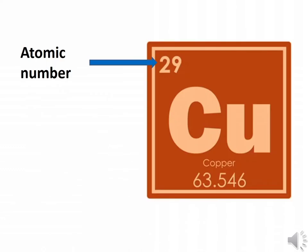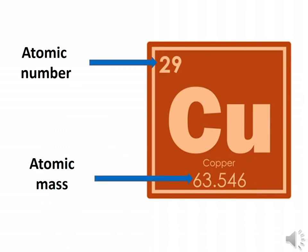The number above each symbol in the table is its unique atomic number. And the lower number with a decimal point represents the atomic mass of the element.